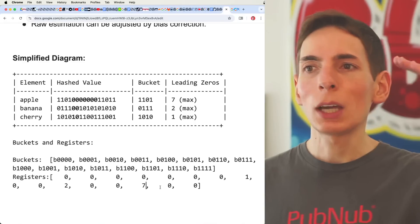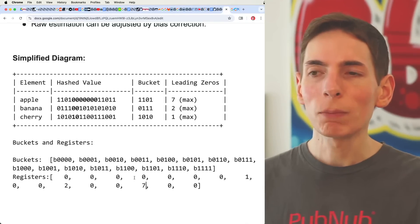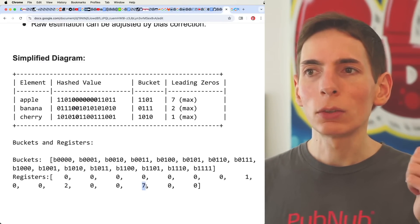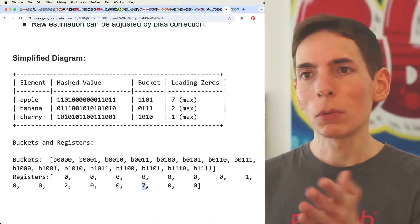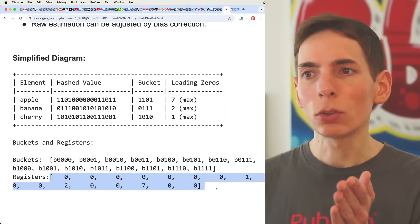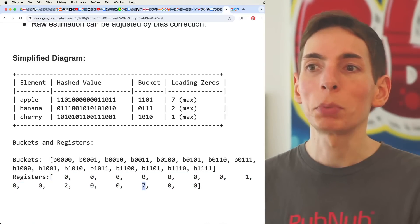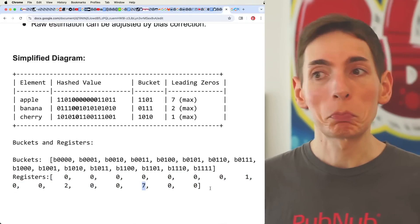Then, now every time we add a new element, we follow the same procedure. And we only update the row or the column of the array if we need to. And you only ever update it if it's bigger than the current number. That's pretty straightforward.